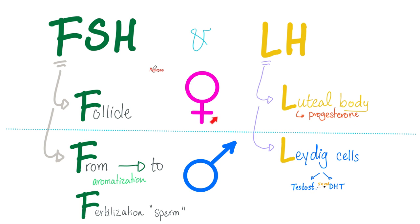In females, FSH targets the follicle — follicle stimulating hormone — wanting the follicle to grow until ovulation releases the ovum. In males, FSH performs aromatization, converting androgens to estrogens, and also helps make and sustain sperm for fertilization. LH in females makes the luteal body — luteinizing hormone. The word luteal means yellow. It secretes progesterone to maintain the endometrium of the uterus to sustain the baby until the placenta appears in the second trimester. In men, LH stimulates the Leydig cell to convert testosterone into the even more potent dihydrotestosterone.